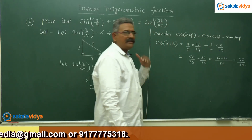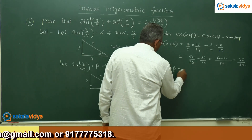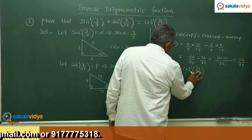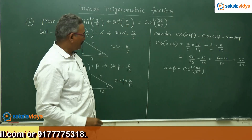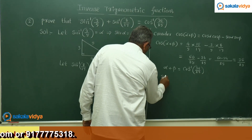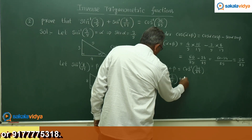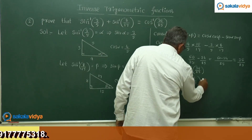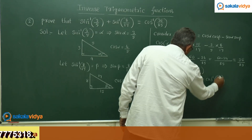Since cos of alpha plus beta equals 36 by 85, alpha plus beta equals cos inverse of 36 by 85. Replacing the respective alpha and beta values: sin inverse of 3 by 5 plus sin inverse of 8 by 17 equals cos inverse of 36 by 85. Hence it is proved.